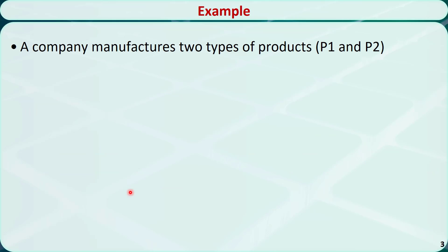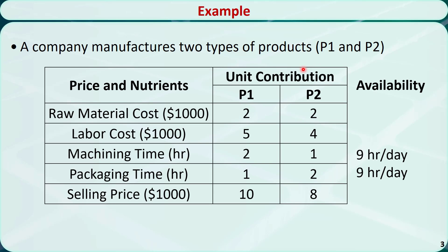Let's see an example. A company manufactures two types of products, P1 and P2. Producing each P1, we need $2,000 worth of raw material, $5,000 worth of labor, 2 hours of machining time, and 1 hour of packaging time. The selling price of each P1 is $10,000.